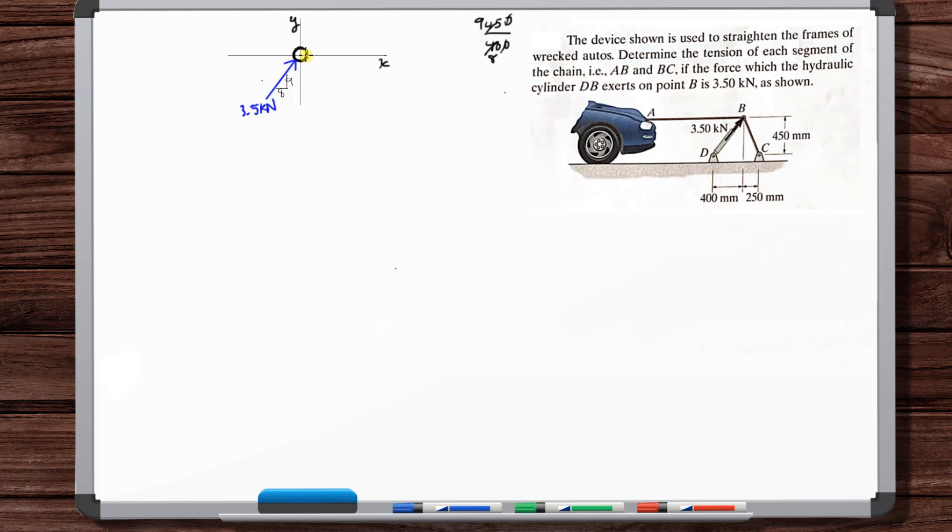We could just assume directions for the chain since it's unknown. But let's try to intuitively put the right directions. The BC chain should be pulling down. So this is F_BC and this slope ratio is 450 to 250, so 9 to 5.